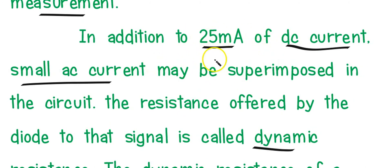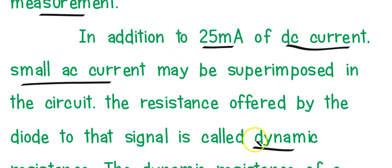In addition, if there are AC conditions — if an AC signal is applied in addition to DC — then we need to define the dynamic resistance.